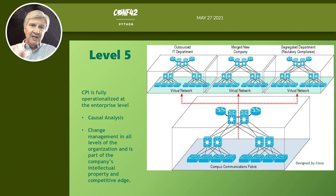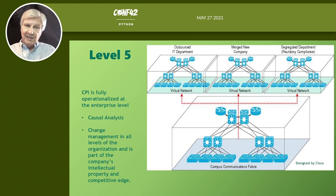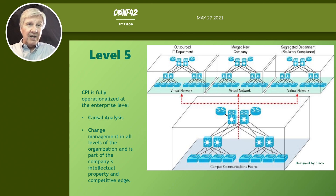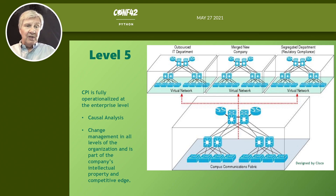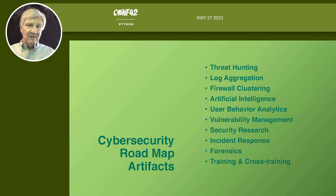At level five, you're looking at outsourced departments, mergers, or segregating departments for regulatory requirements — for example, walling off people who can't see all the other data. We also start doing causal analysis early: what caused a fault, flaw, error, or intrusion? If we're looking at the pipeline ransomware incident, what caused it? We must secure all our intellectual property because that's our competitive edge — exactly how an organization differentiates itself in its industry.